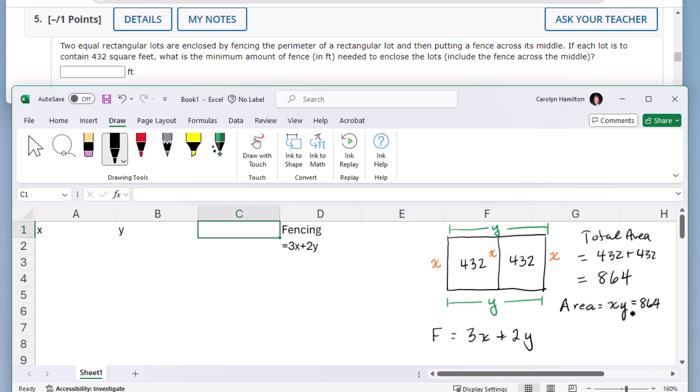Then I want to solve for one of those in terms of the other. I'll solve for y, so let me divide by x. y is 864 over x.